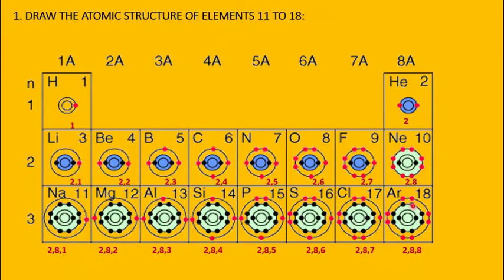Argon (atomic number 18): out of 18 electrons, 2 go in K shell, 8 in L shell, remaining 8 in M shell. Electronic configuration: 2, 8, 8. All three shells are completely filled. M shell can hold up to 18 electrons, but the outermost (valence) shell can only hold a maximum of 8 — per Bohr and Bury's rule. So argon's M shell acts as a completely filled valence shell. Write the electronic configuration below each element's structure in your notebook.